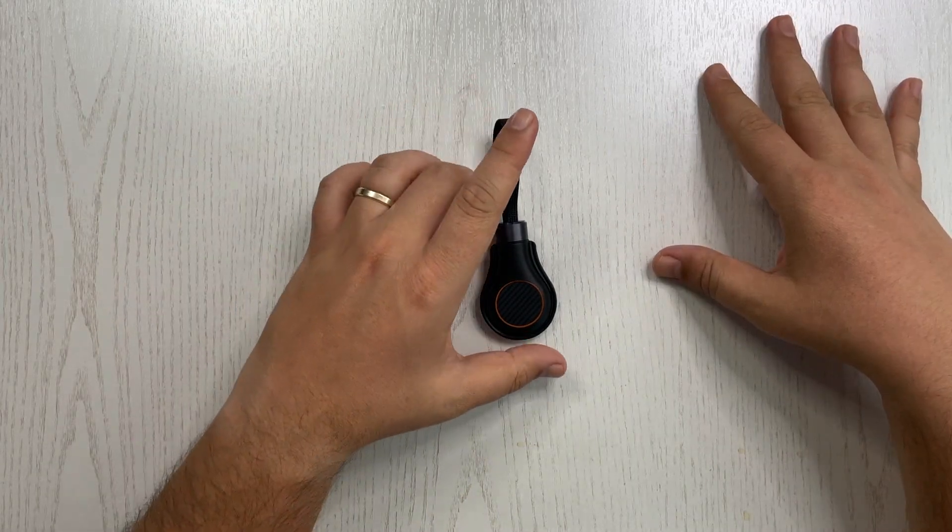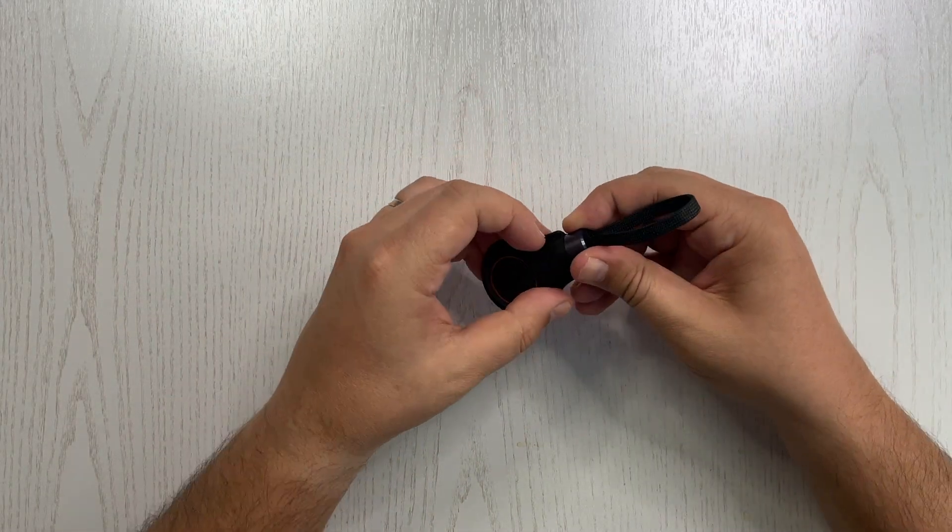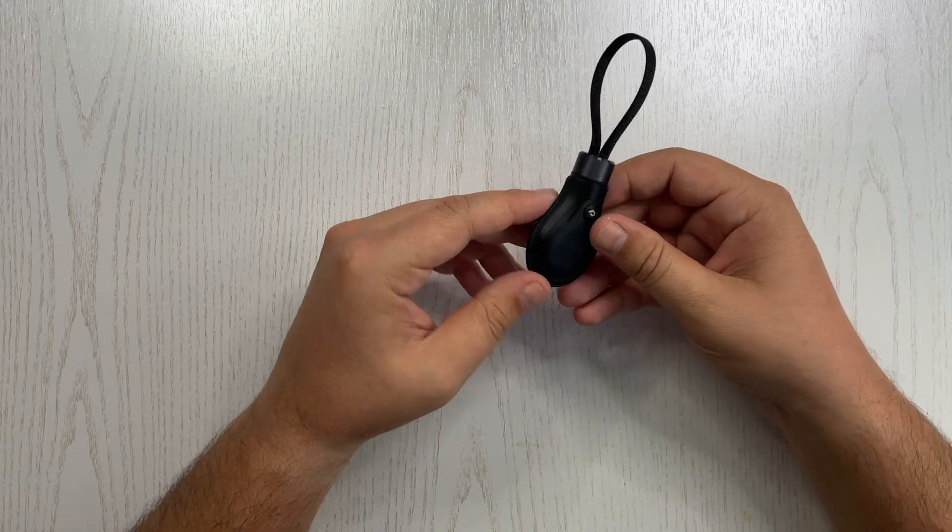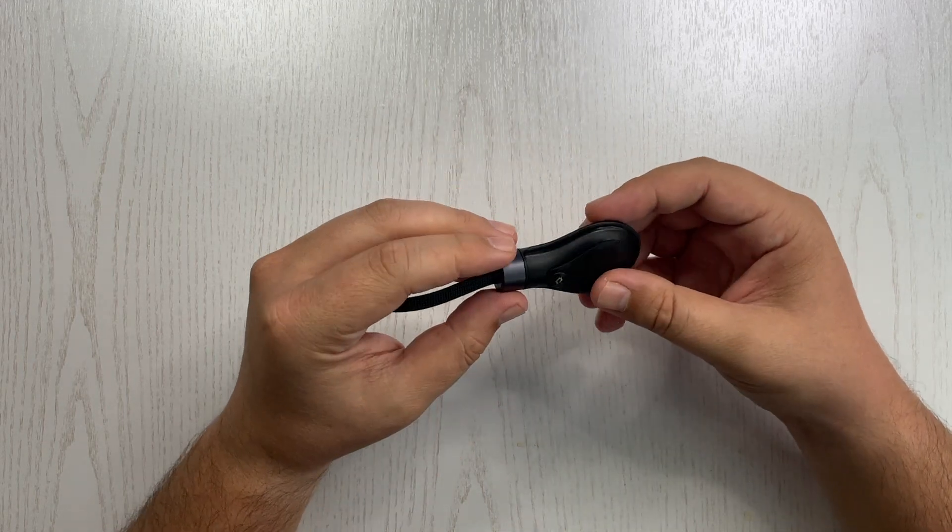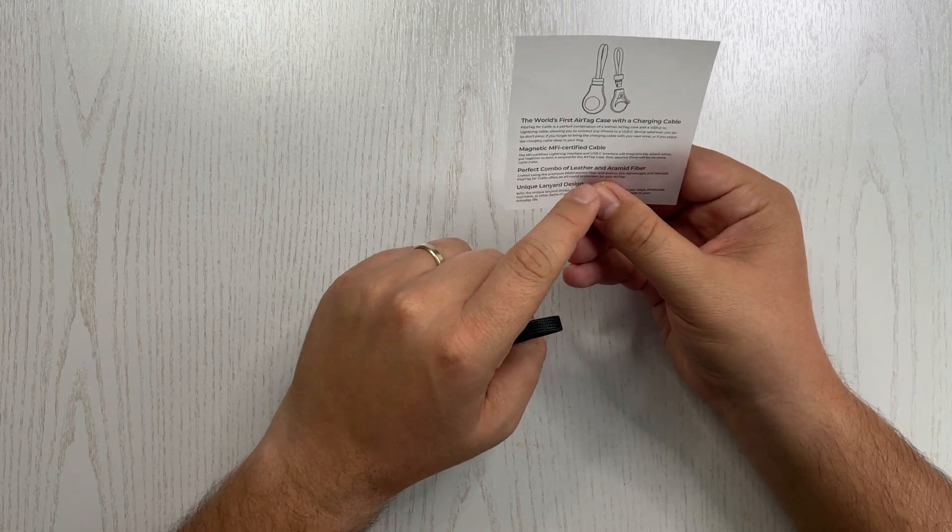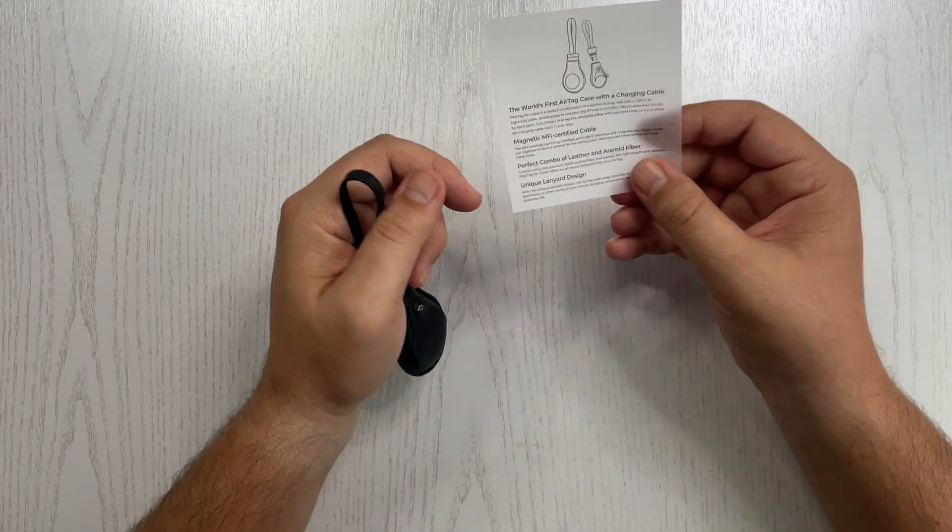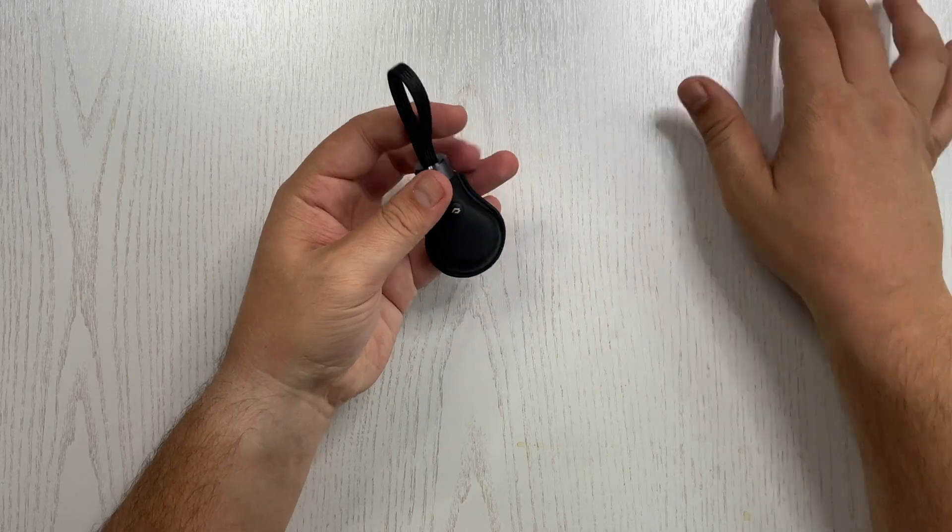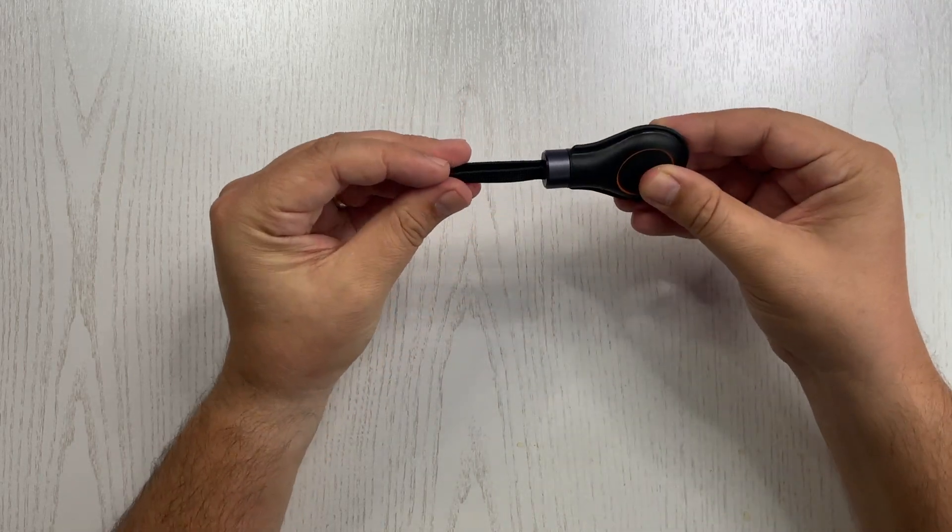So basically this is it for the latest accessory from Pitaka. As you can expect, they have premium materials. And as you can see, this is leather and aramid fiber like we are used to from Pitaka. So this is a pretty sturdy device.